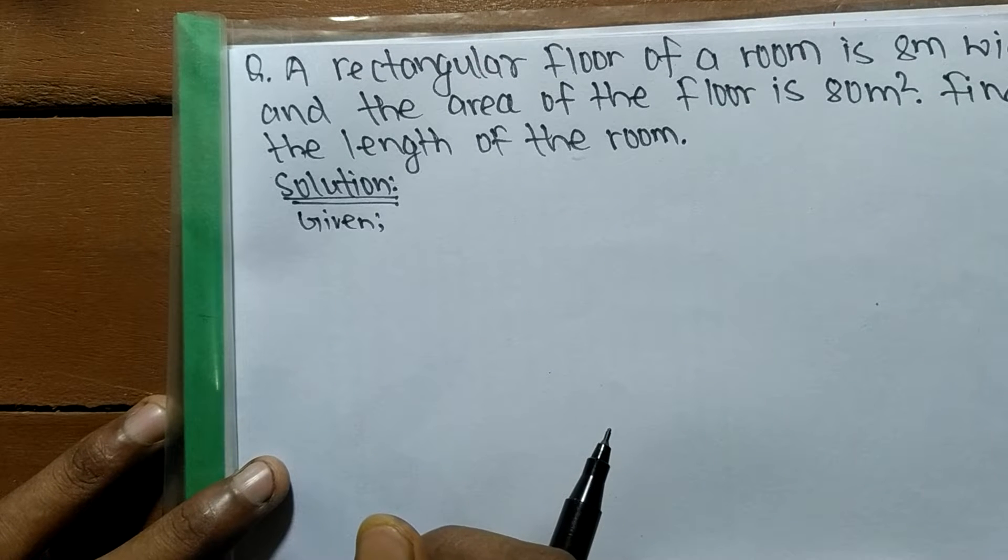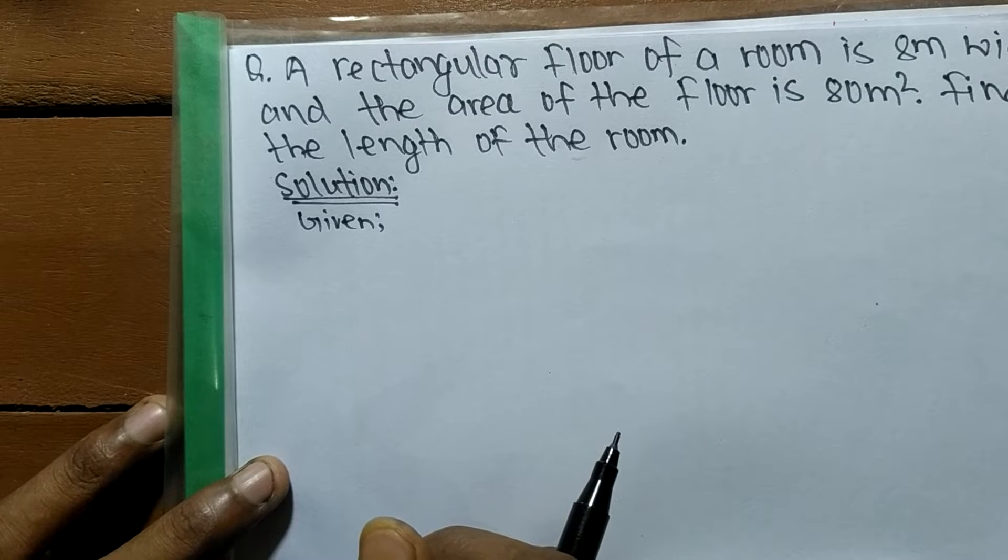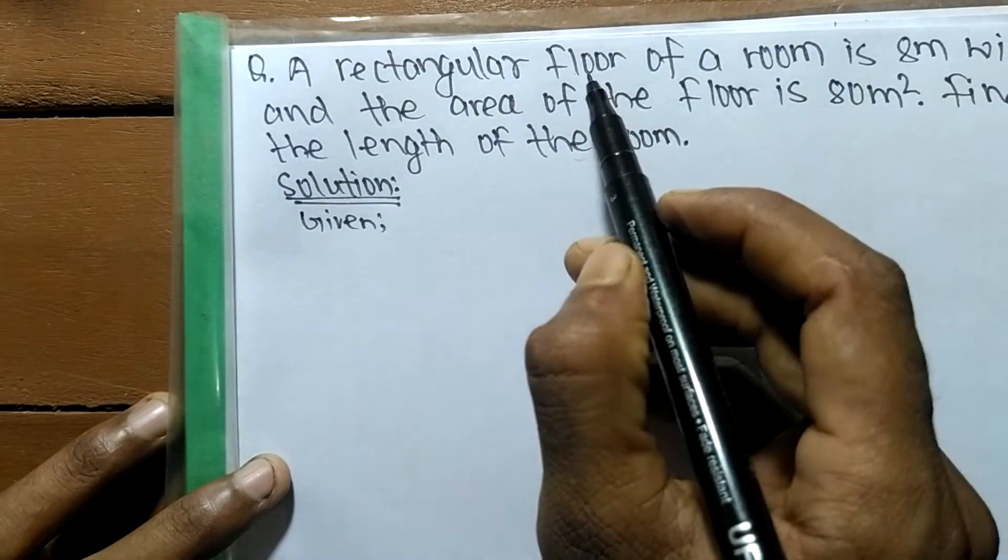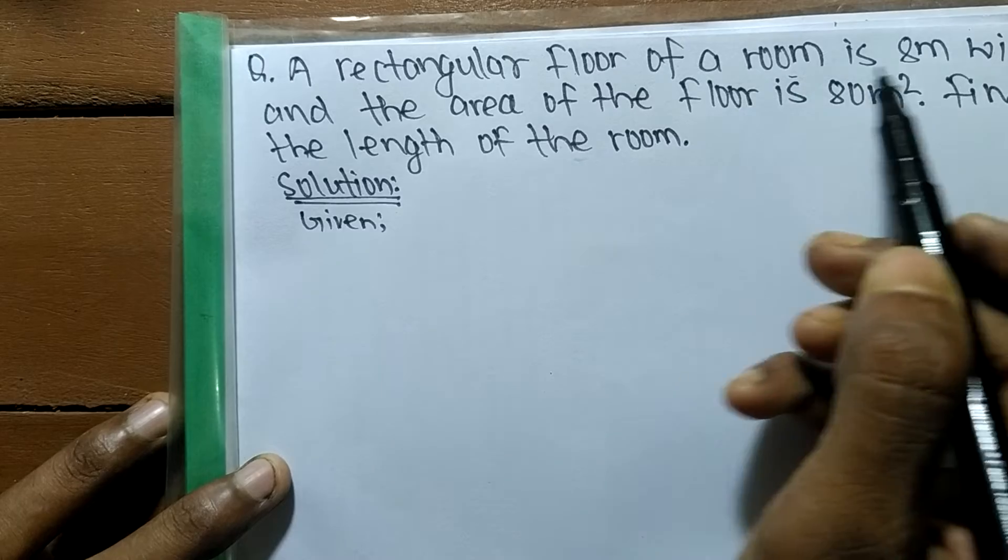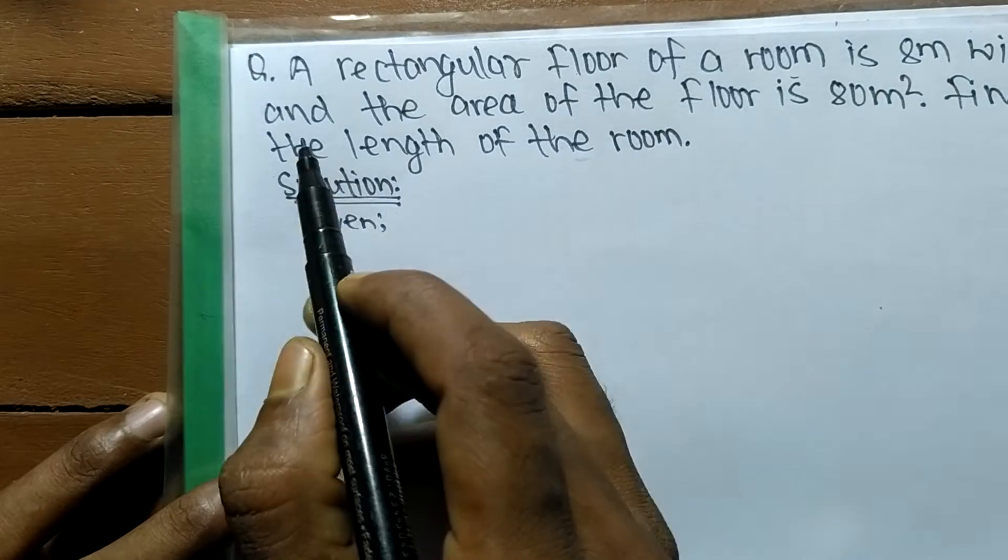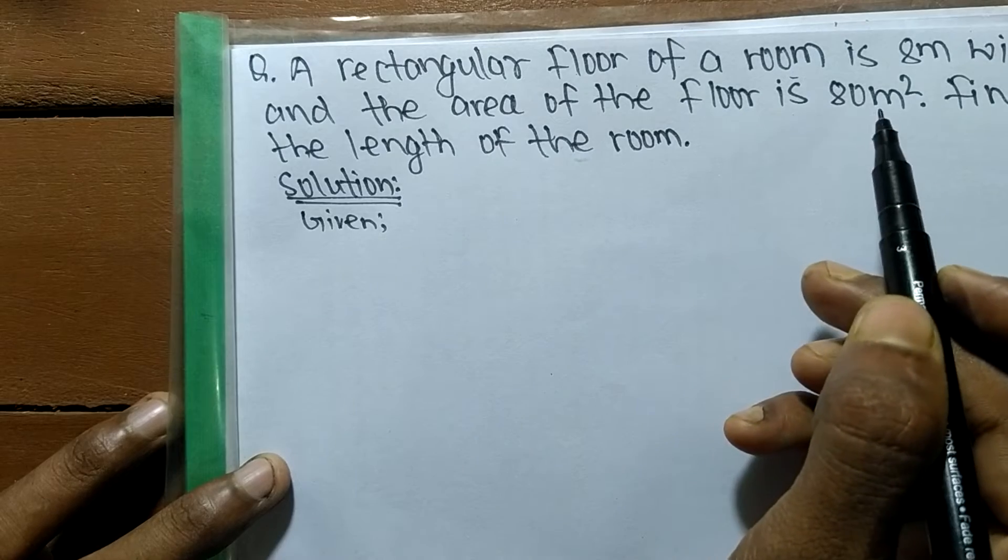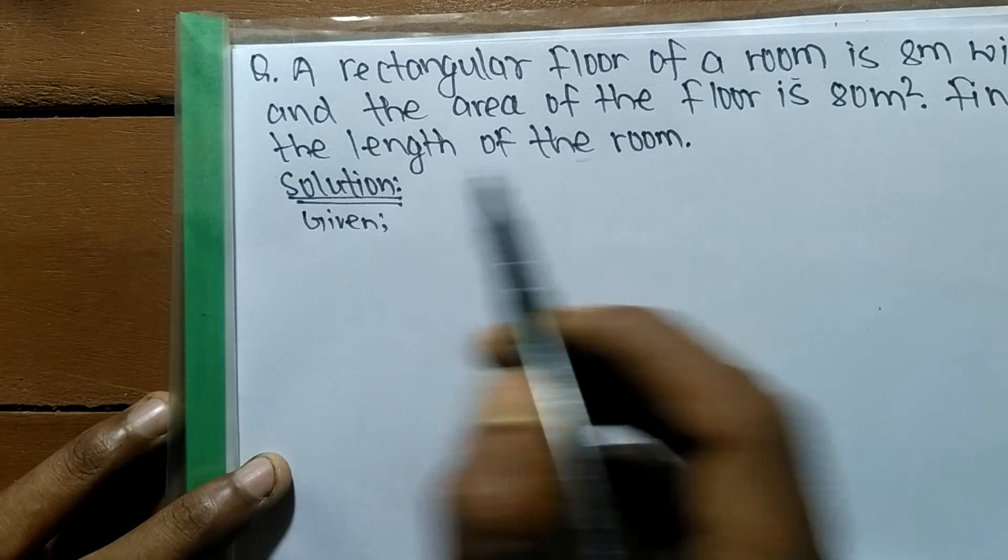Today in this video we are going to solve a word equation. The question is: a rectangular floor of a room is 8 meters wide and the area of the floor is 80 square meters. Find the length of the room.